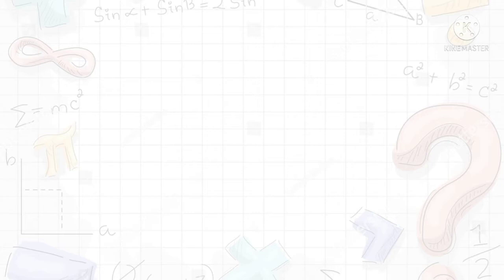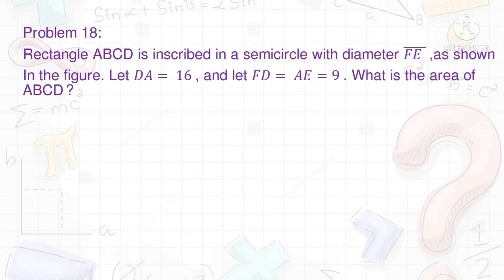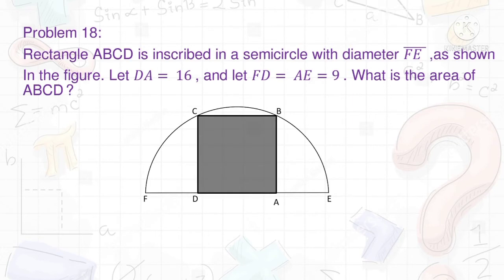Now let's see this problem together. Problem 18: Rectangle ABCD is inscribed in a semicircle with diameter FE, as shown in the figure. Let DA = 16, and let FD = AE = 9. What is the area of rectangle ABCD?